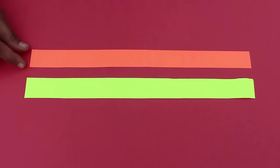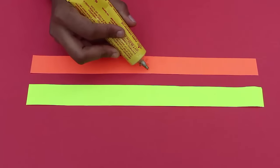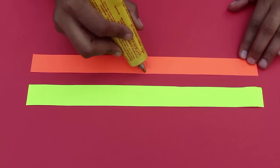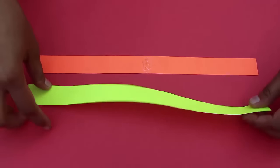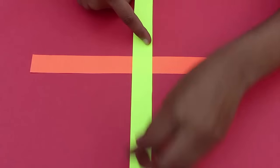Now first, apply glue in the center of one strip and then stick the other strip crosswise to make a plus sign.